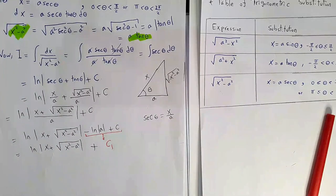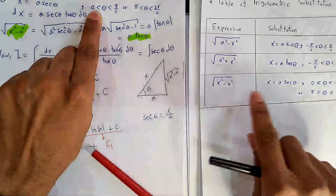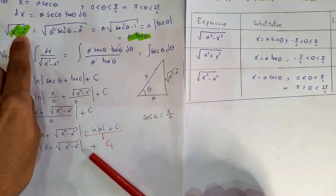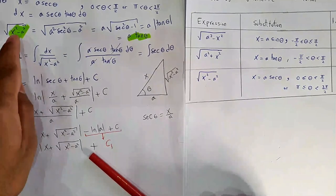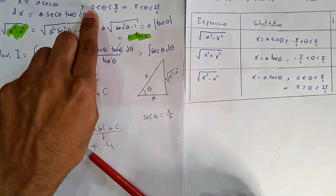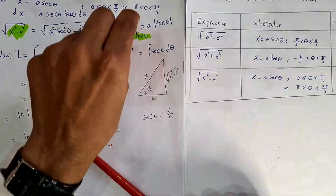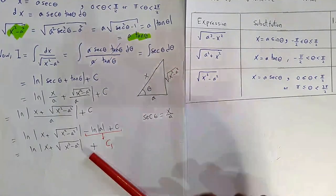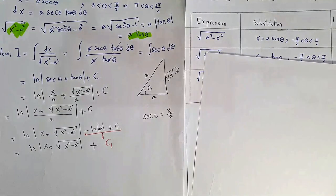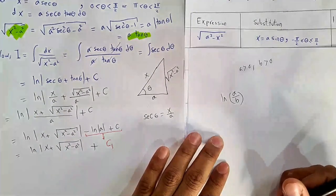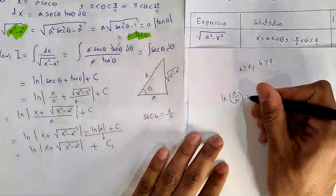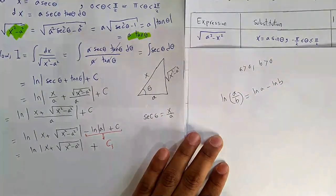The answer is ln|(x + root(x²-a²))/a| + C = ln|x + root(x²-a²)| - ln a + C. Since ln a is a constant, absorb it into C₁ to get ln|x + root(x²-a²)| + C₁. Note: the endpoints 0 and π are excluded from the interval because tan θ = 0 there, making the denominator zero.